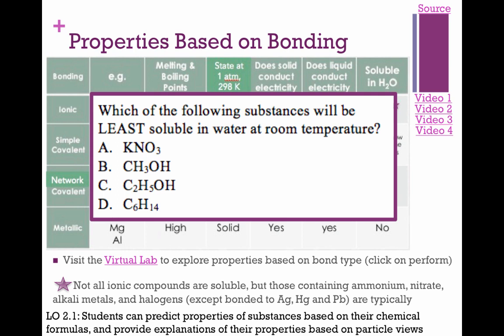Here's a practice multiple choice: which of the following substances will be least soluble in water at room temperature? You want to look at the one most different from water. Anything with potassium and nitrate is automatically soluble. Among the remaining options B, C, and D — D is the answer because B and C can hydrogen bond, while D is all dispersion, making it most different from water and least soluble.